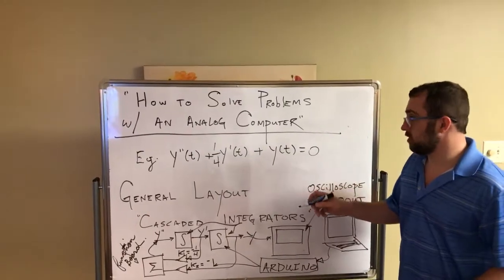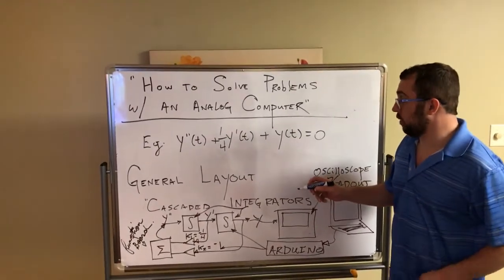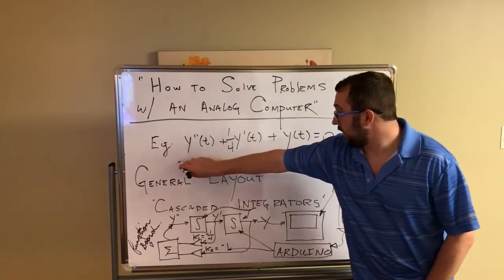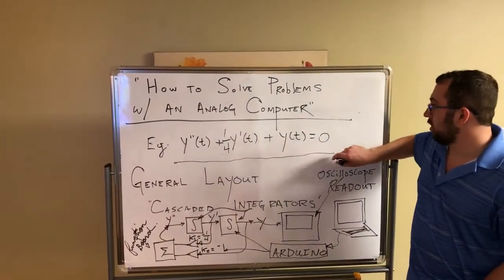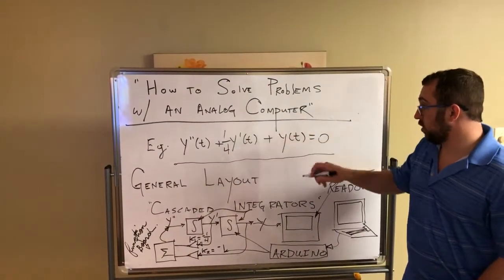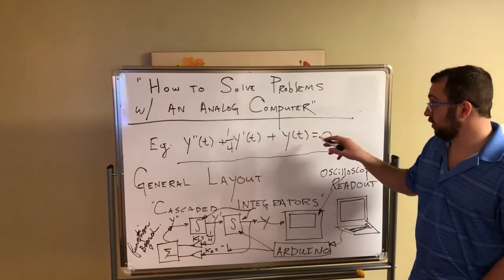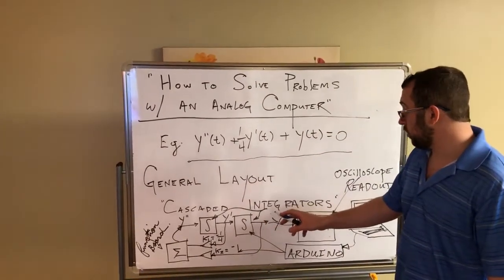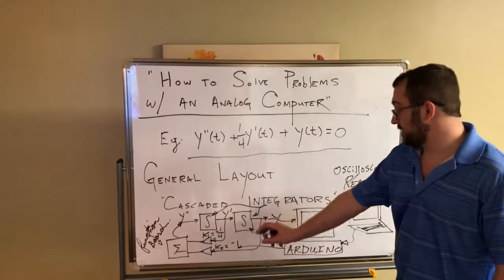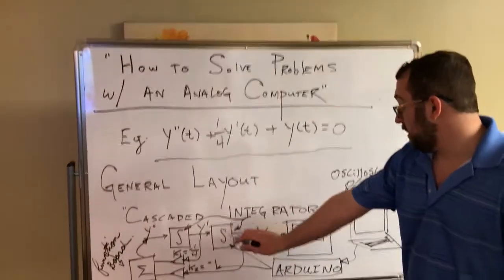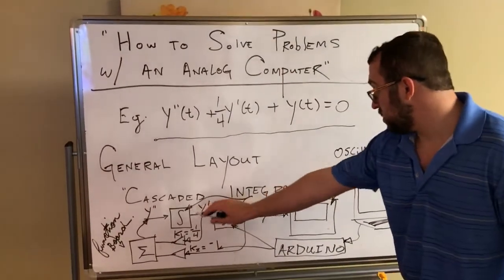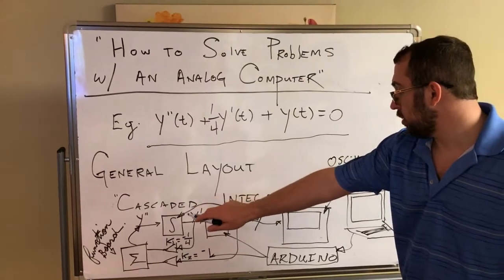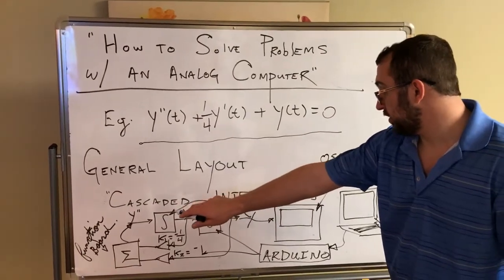A particular problem should be solved to show how it works. The example is a second-order linear differential equation. The analog computer has two general components: it has a cascaded gang of integrators. In this case, you would need two to get y from y double prime, which is the second derivative in time.